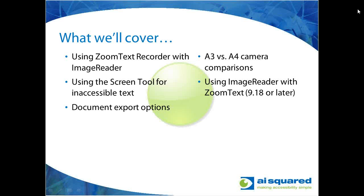Then I'll go through a couple of the document export options available in Image Reader — you can export to PDF or Word, and I'll explain the differences. We'll also show a comparison of the A3 and A4 cameras, demonstrating how much bigger a footprint the A3 can capture with a magazine open to two pages. Lastly, we'll look at the tracking options available in Image Reader when using it with ZoomText.